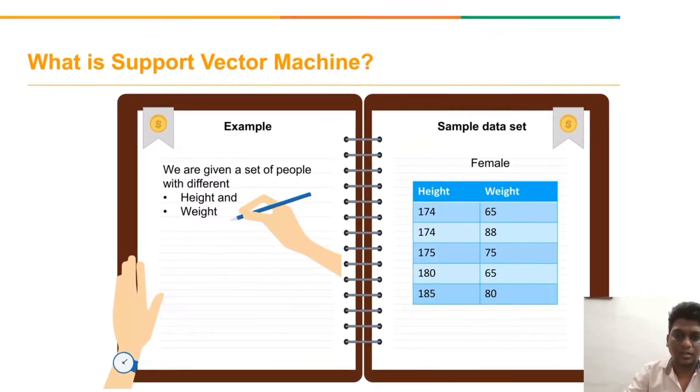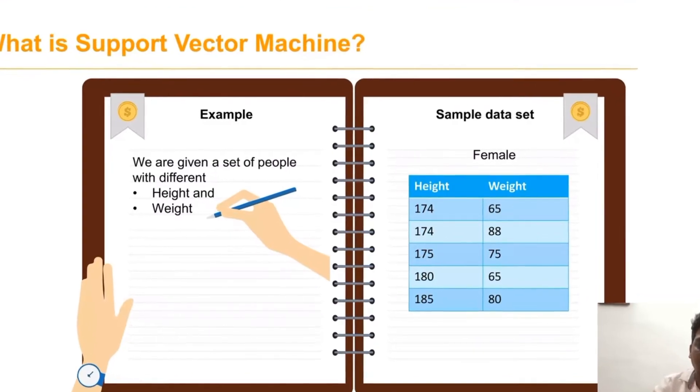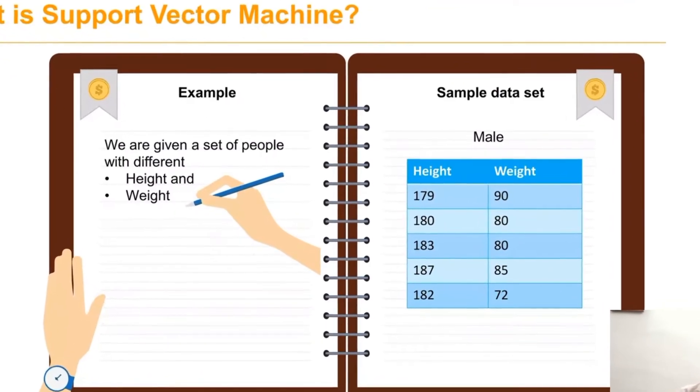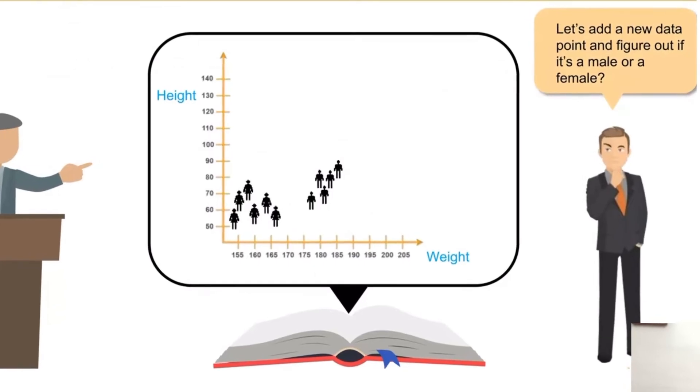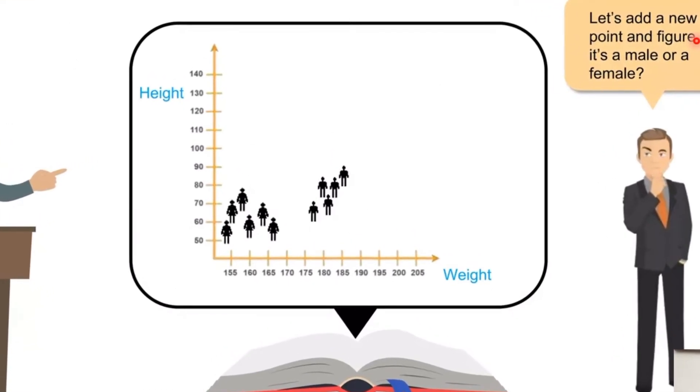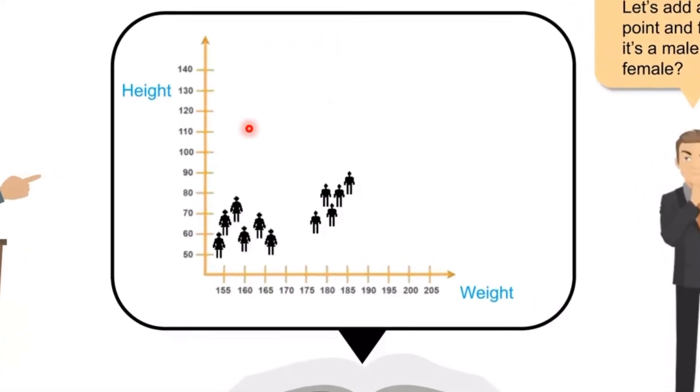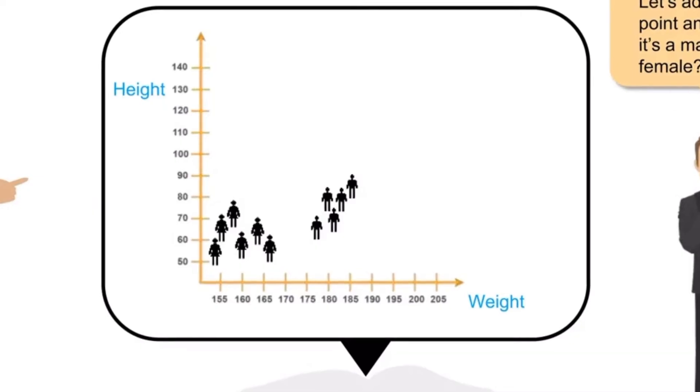We have taken a sample data set of females and males. Now we have to find out when a new data point is given where that data point belongs—whether to category one or category two. We can find it now.